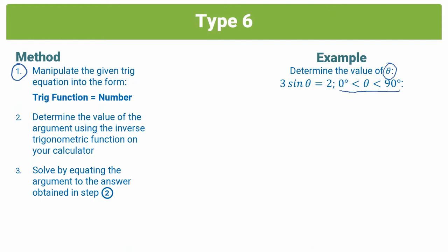So step 1, as we know, is to get into the form trig function equals number. So we have 3 sin θ = 2. I'm going to divide the entire equation by 3 to get rid of the 3 on the left. So that's going to be sin θ = 2/3.